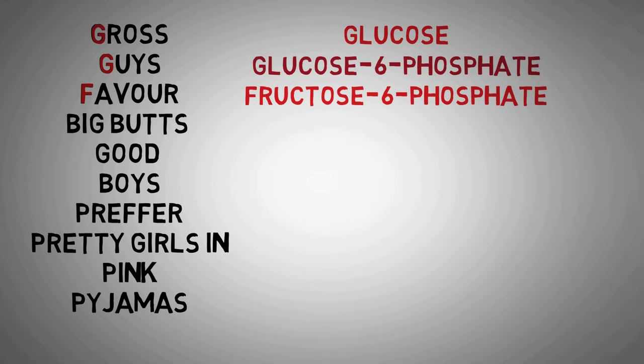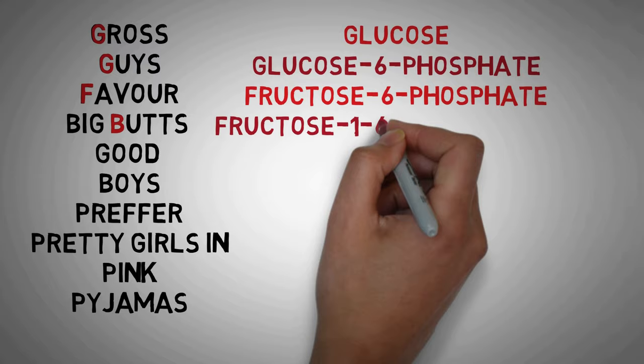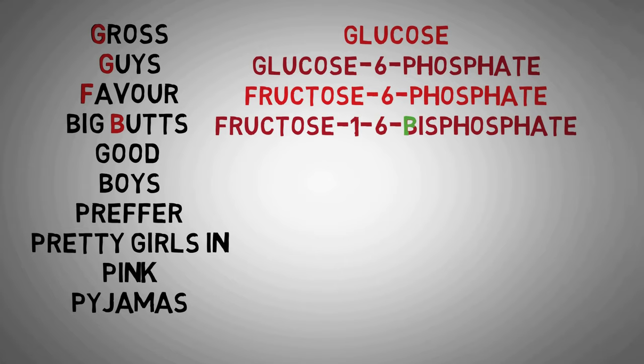In the next reaction, another phosphate molecule gets attached to fructose 6-phosphate to make it fructose 1,6-bisphosphate. Since it is a bisphosphate, now the word for it in the mnemonic starts with B, that is big butts.